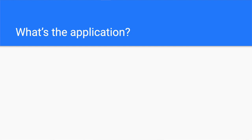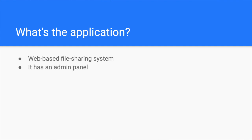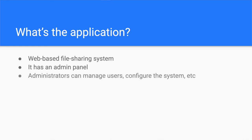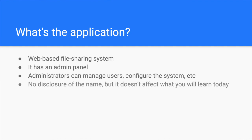Before diving into the details, let's understand what the application does. Simply put, the web application I hacked is a file-sharing system that allows users to securely exchange files. It also has an administrative panel dedicated to administrators for management purposes — they can create users, configure internal servers and networks, etc. To honor the responsible disclosure policy, I will not tell the name of the application. However, you can definitely apply these tips and tricks on the bug bounty programs or penetration testing projects you're working on.